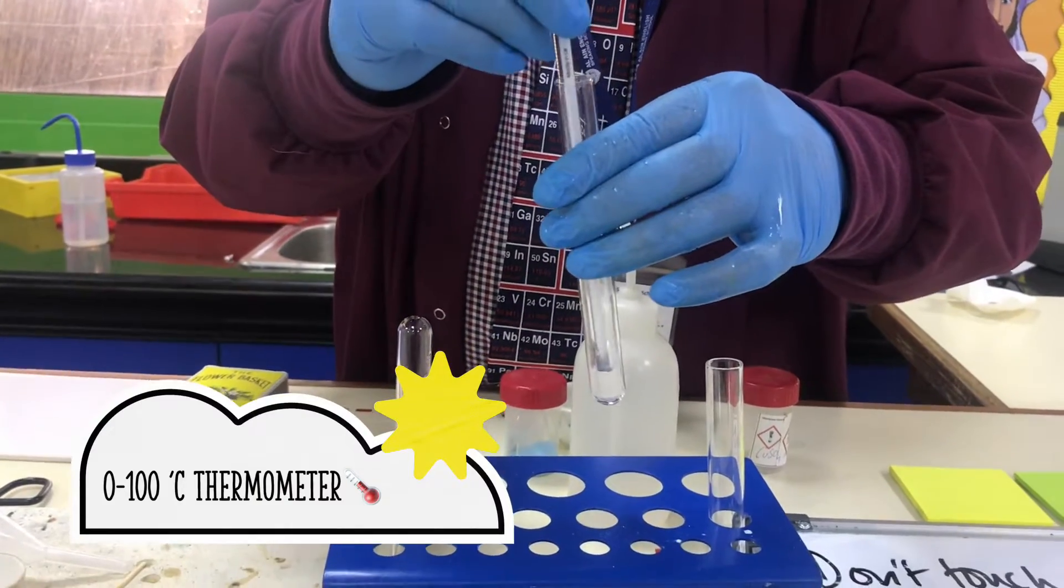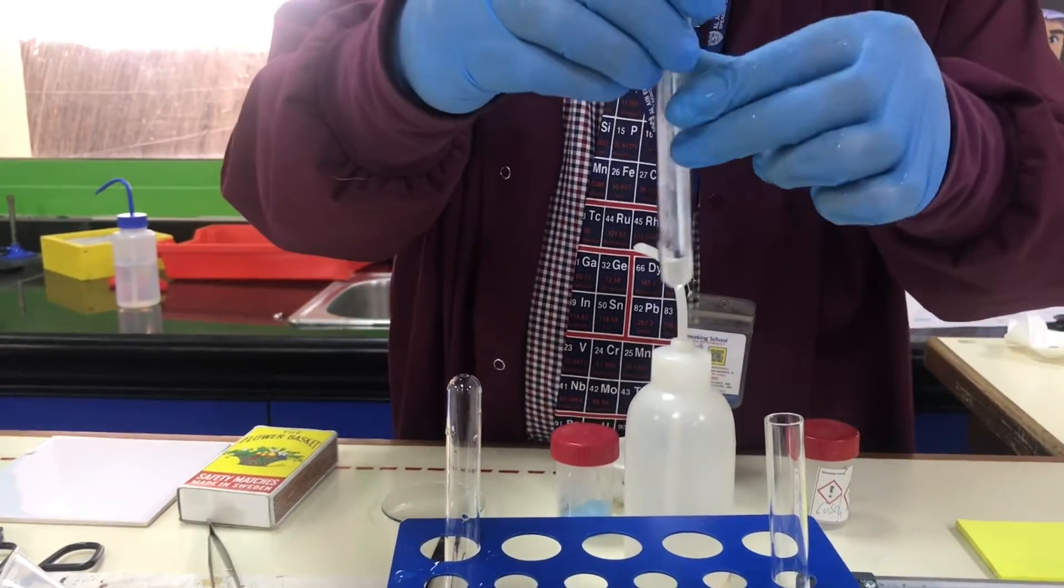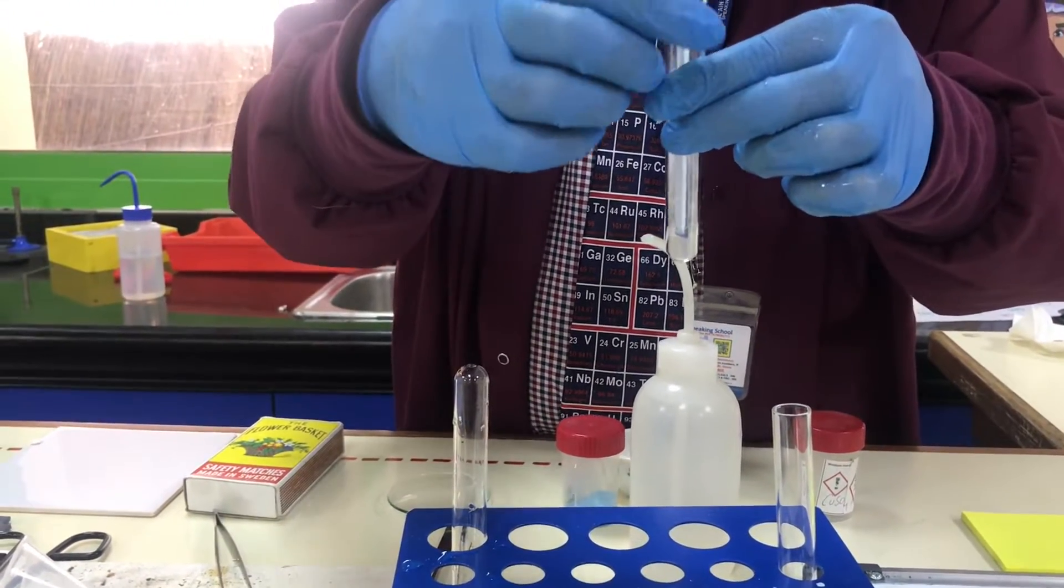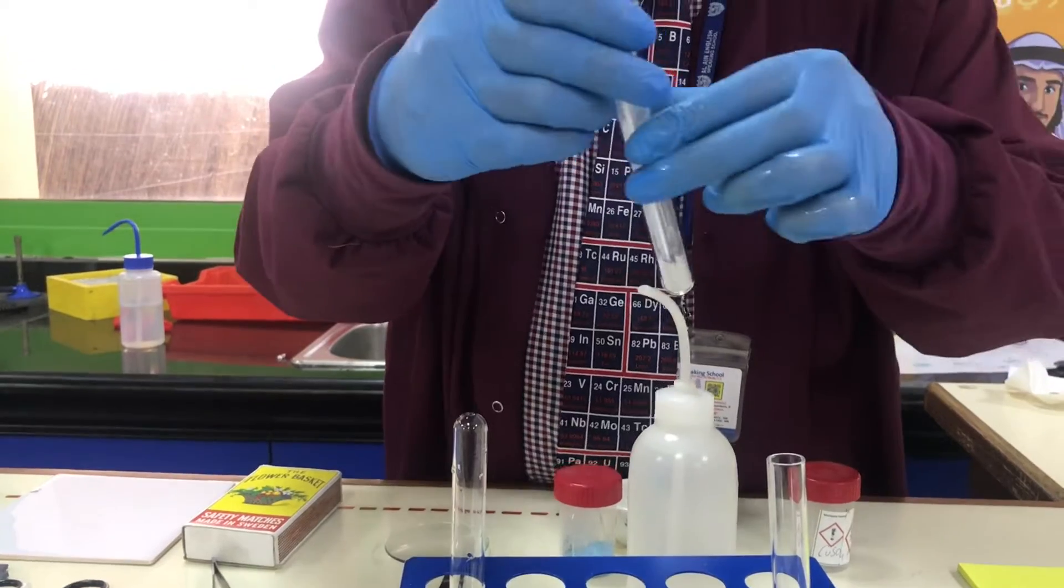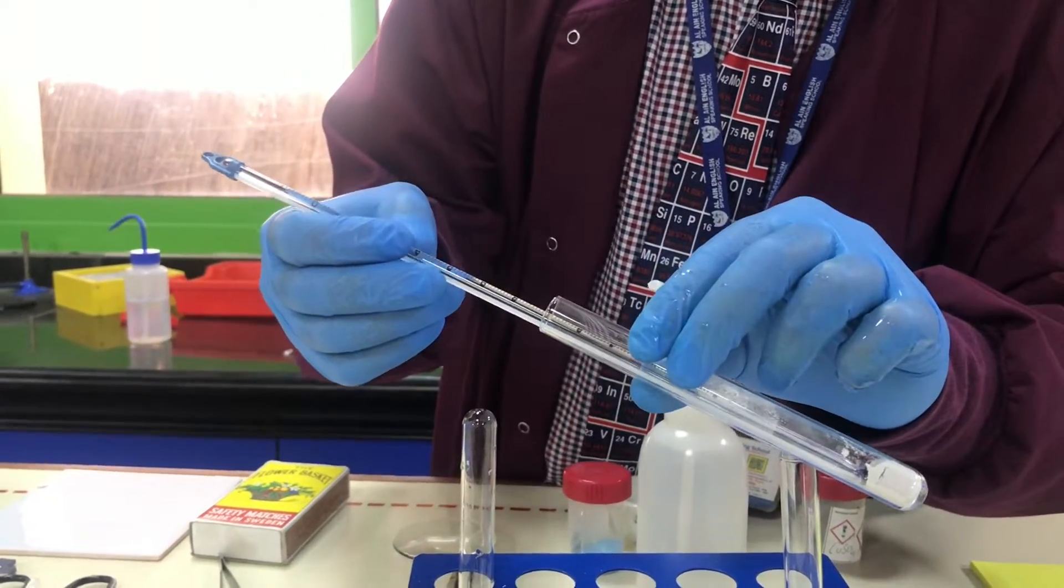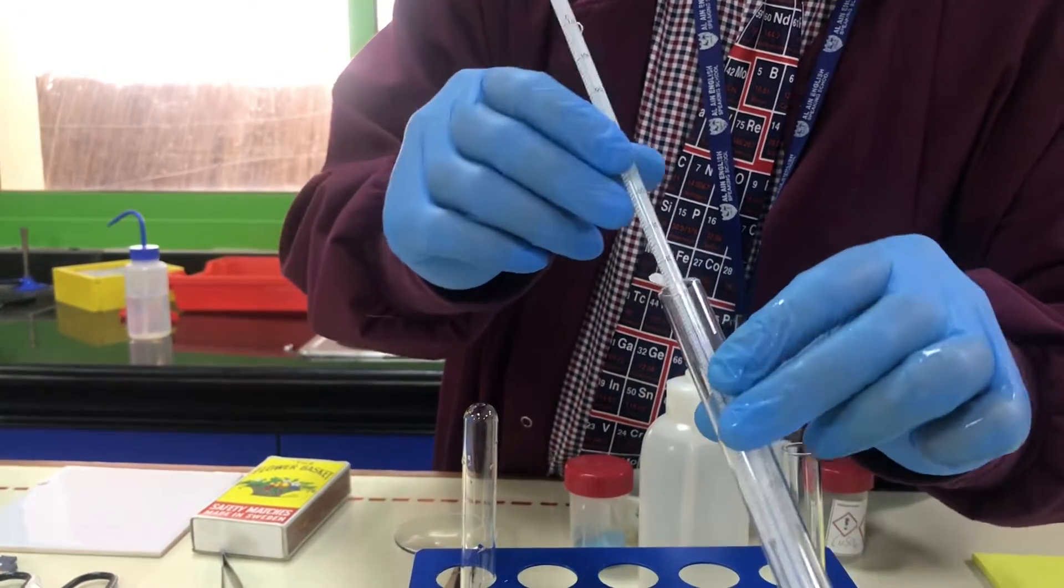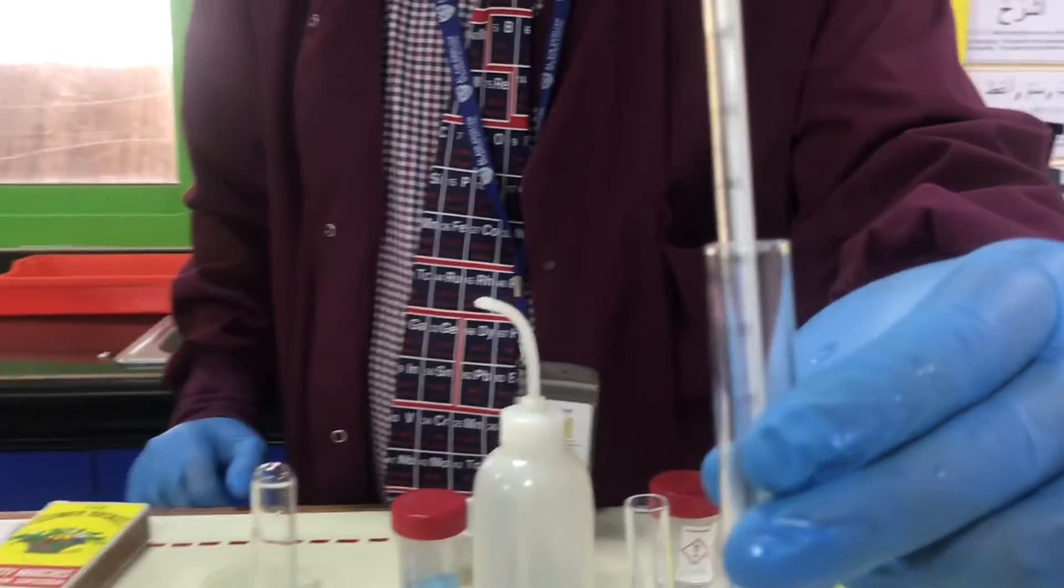Okay, so I've got my anhydrous copper 2 sulfate in a test tube here and what I'm going to now do is just add a thermometer in there and it's cooled down quite nicely. It's quite warm in the lab at the moment and it's just sitting quite nicely at 30 degrees centigrade.